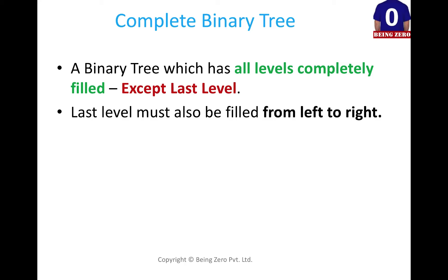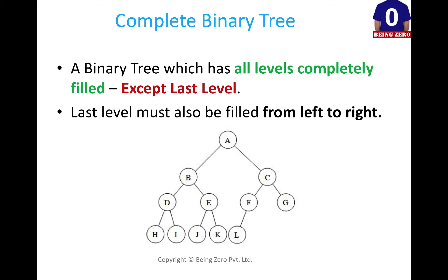If you don't go by definition and look at an example, it will appear very simple what we are talking about. This is a tree which we say is a complete binary tree, because A is filled, then A's left is filled, right is filled. At the second level, at most two nodes would be there and we see both children of A are present.